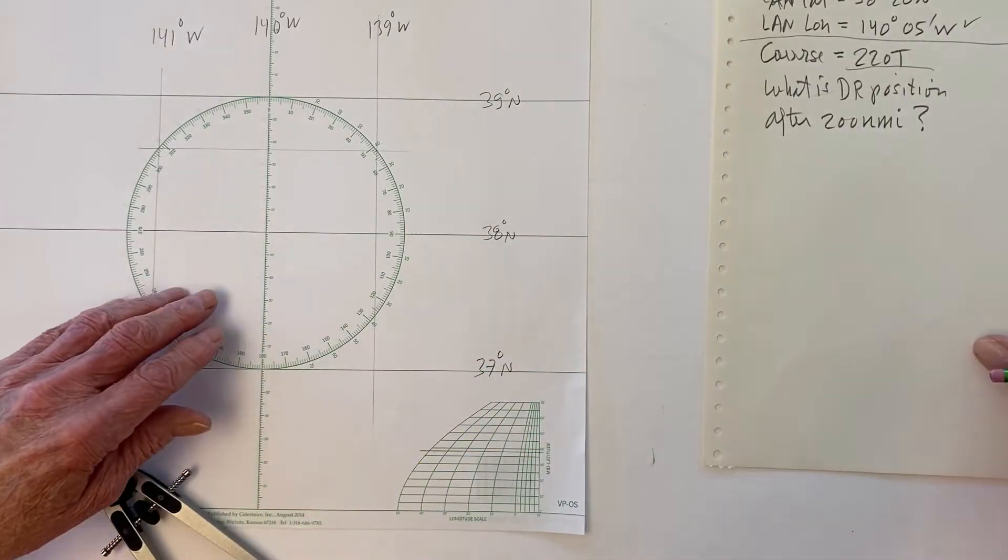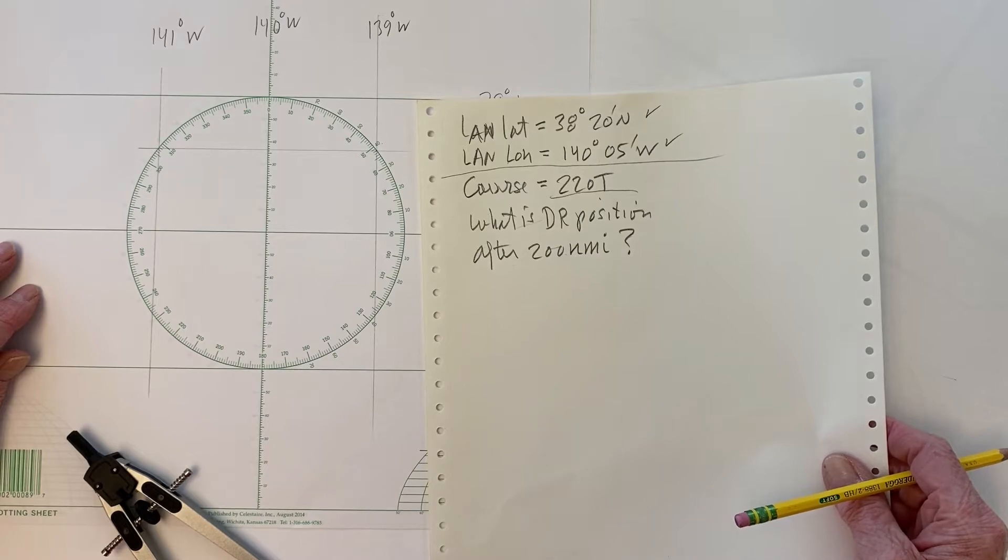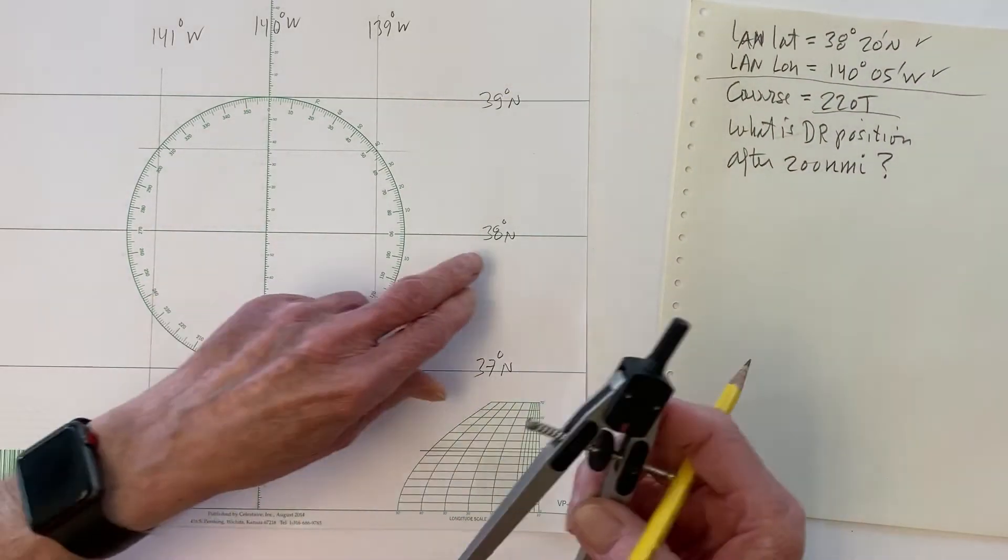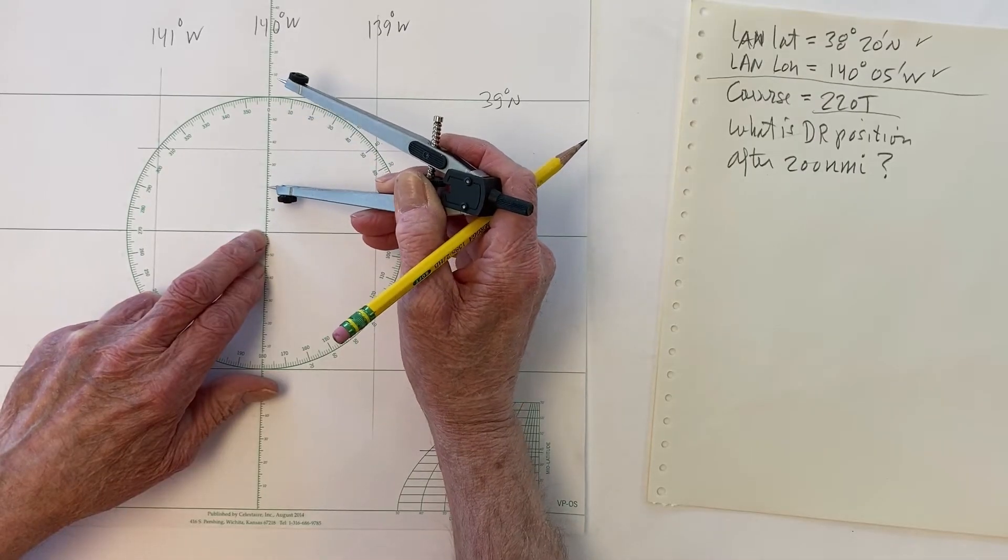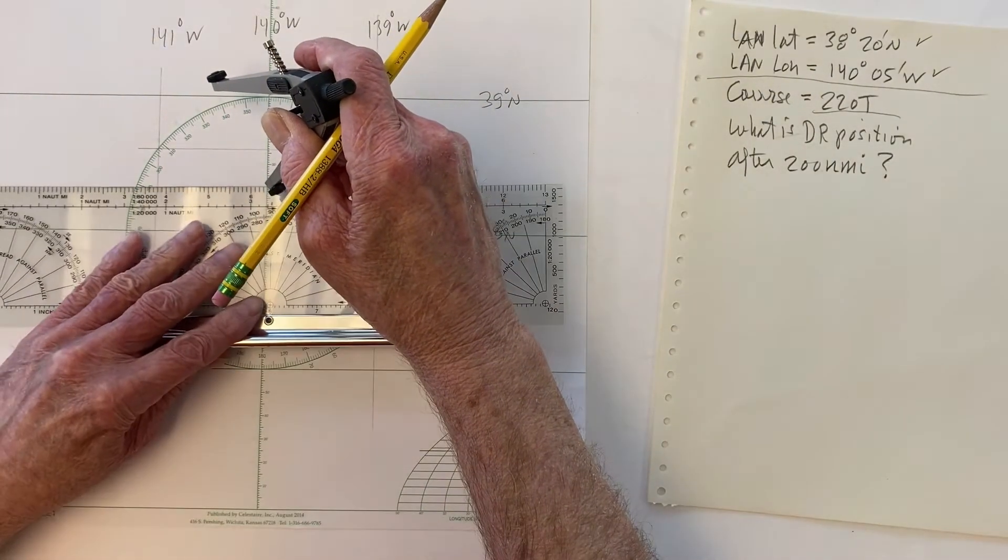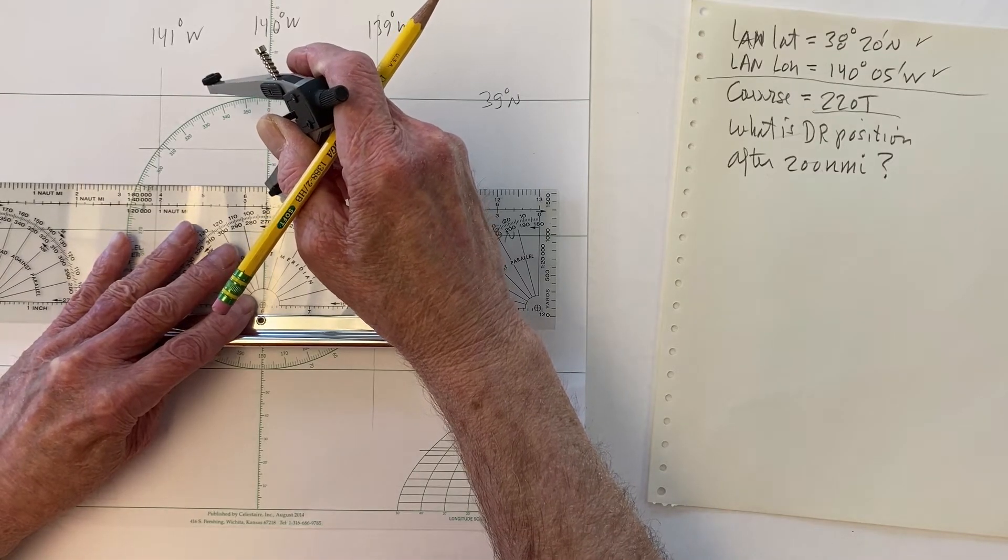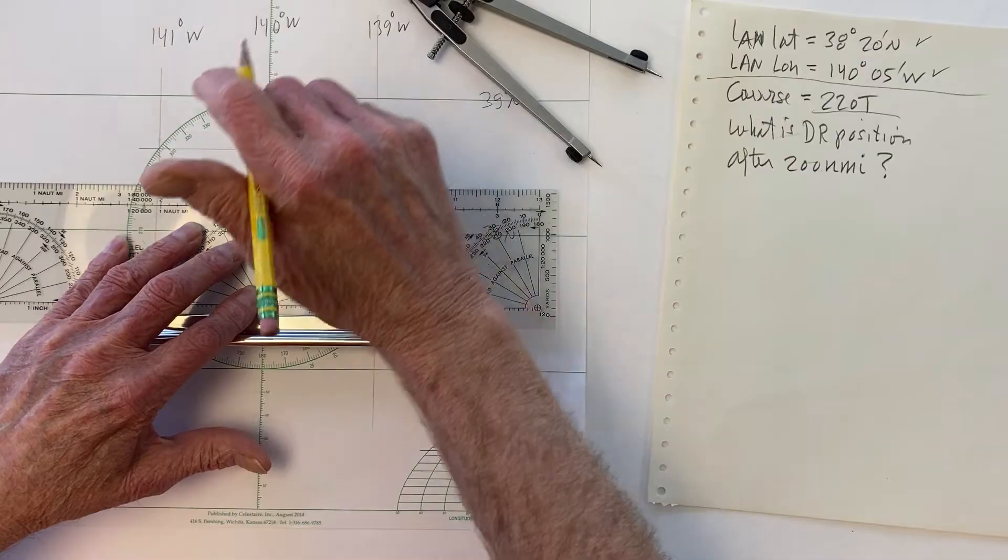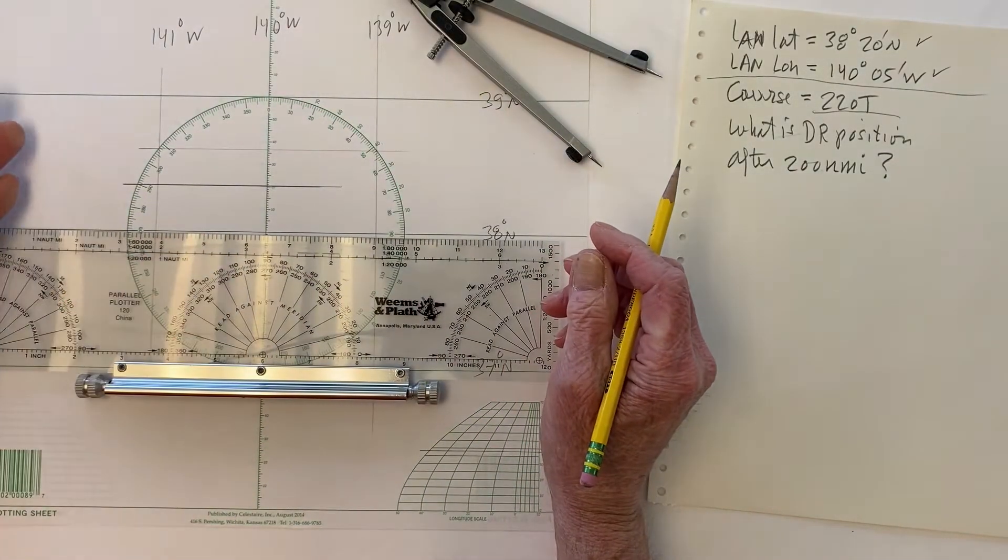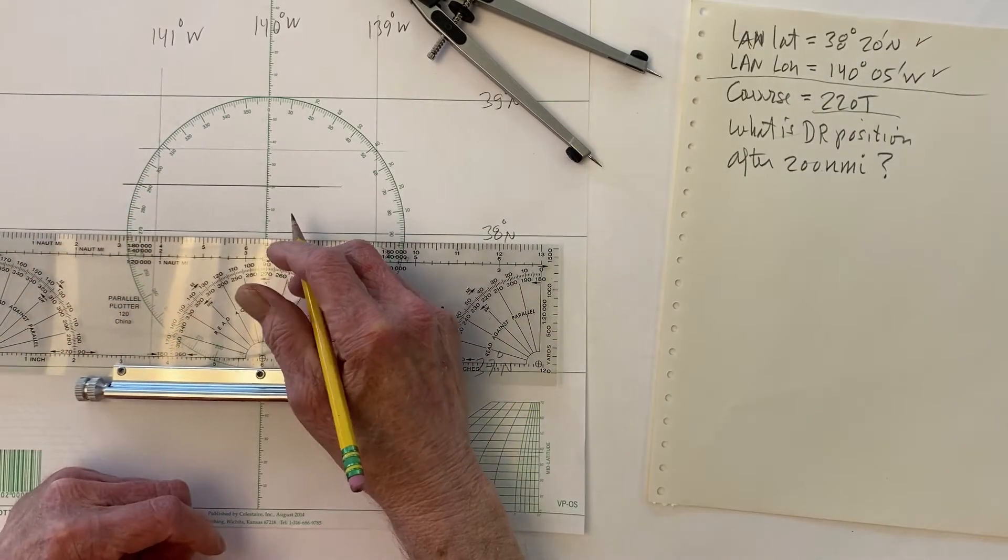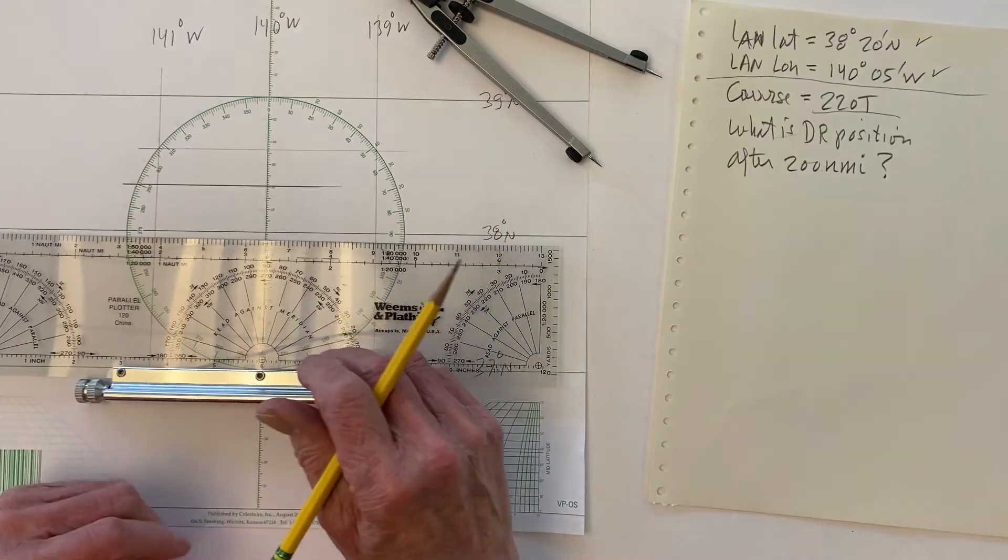Okay, so there our sheet is set up, and now I can do the exercise. We want to plot a position at latitude 38 degrees, 20 minutes north. So here's 38. And now I go 10, 20 is right here. And then I can just set this here. And this is basically, if I did a noon site, that's my line of position right there. That would be the noon site, and it's a line of position, and it's at 38, 20 north.